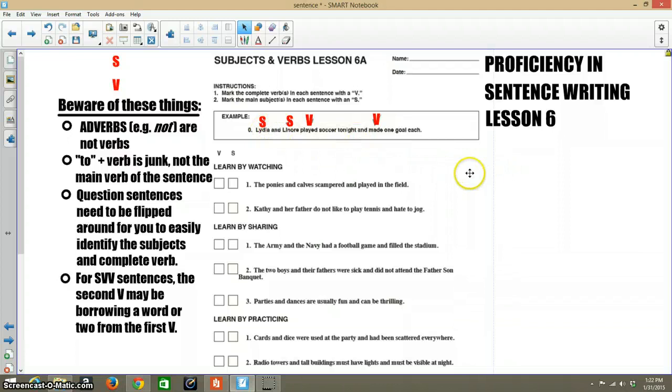So let's do the first one. So ponies is the first subject. There's two words in that complete subject, but you need to narrow it down to the one word that is the main subject. So ponies. And then calves is the second verb. There's the word 'and' between them, just like up here. There's a pair of subjects.